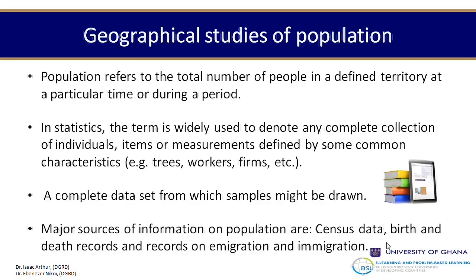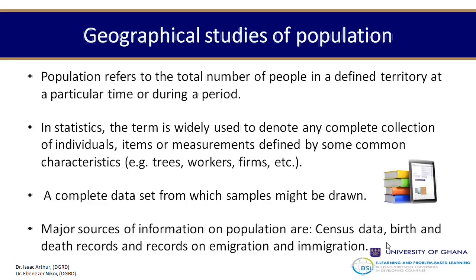Some of the major sources of population information and data come from census reports. In Ghana, we have had reports — one in 1980, another in 1992, another in 2010. Usually census reports are carried out every 10 years, but depending on resources available, it may be longer or shorter. Another source will be birth and death records, and also records on migration. These are the places to visit if you want to find more information about the country's population.